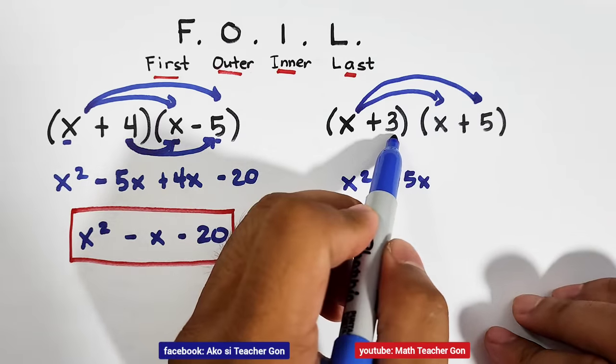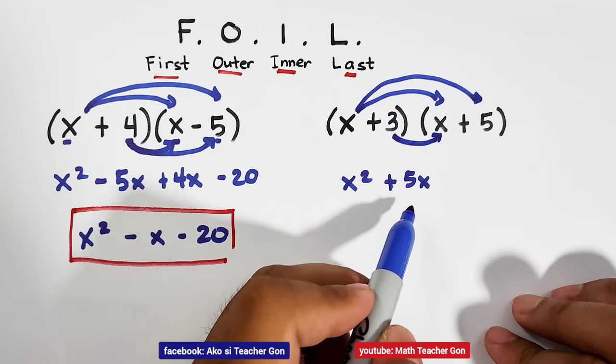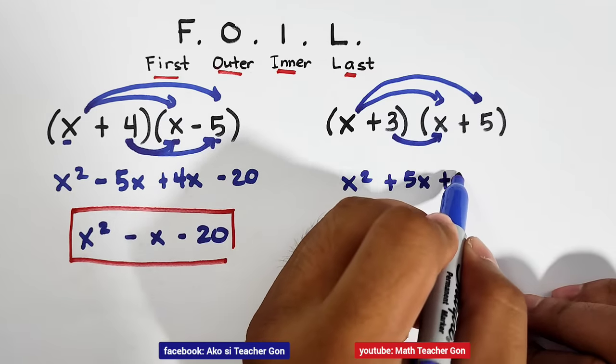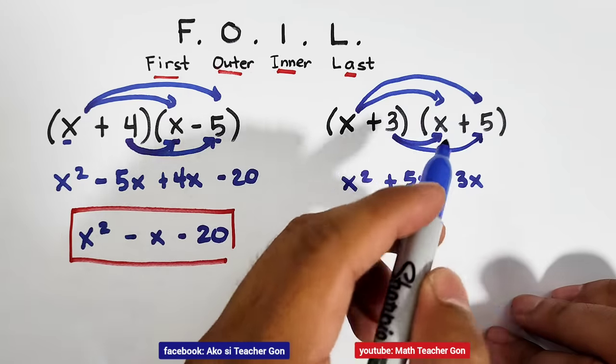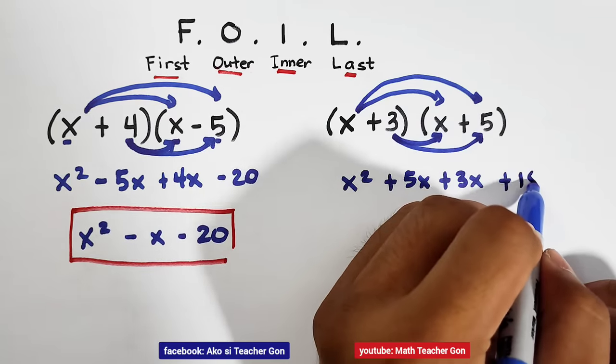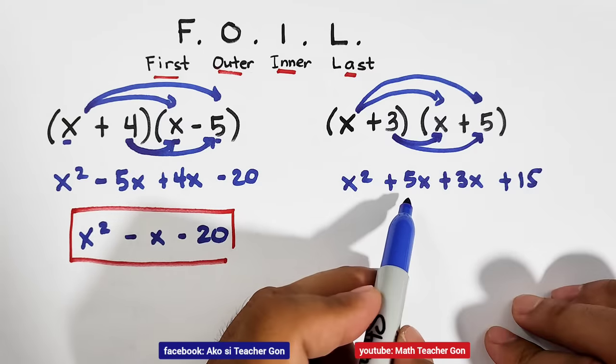Next, 3 times x, that is plus 3x. Last terms, 3 times 5, that is plus 15.